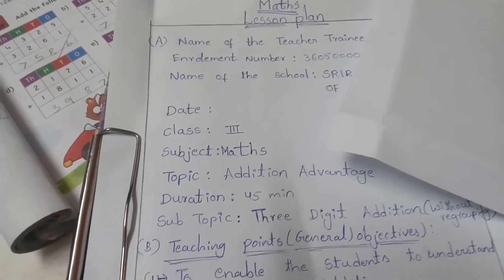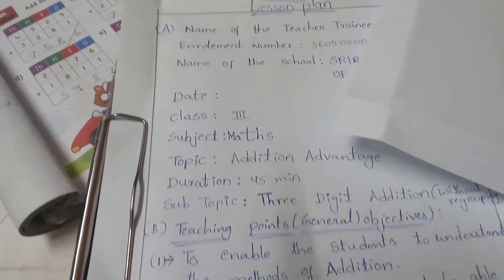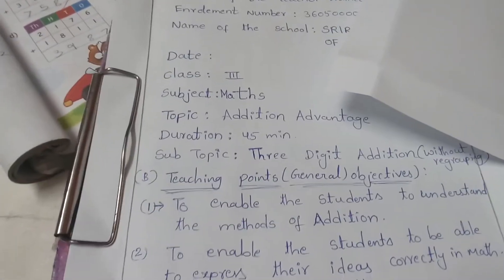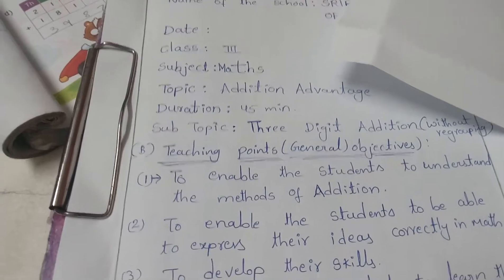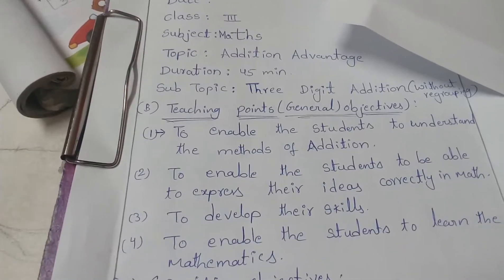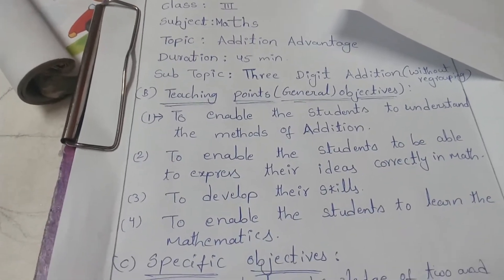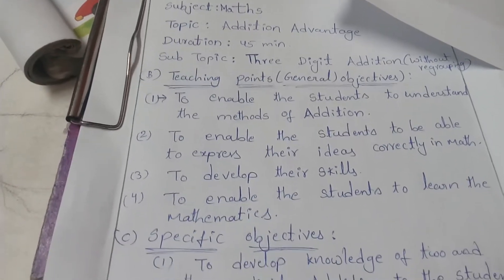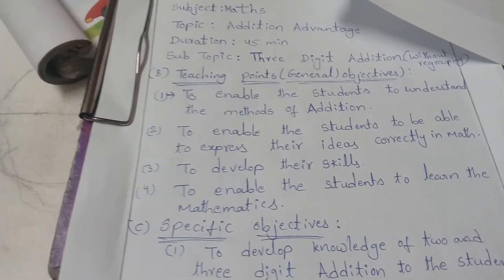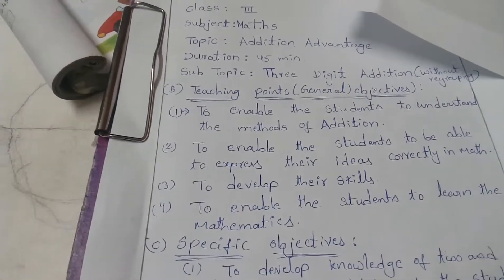Manus lesson plan for a third class. The topic is addition, with the subtopic being 3D addition. The teaching points and specific objectives are outlined accordingly.